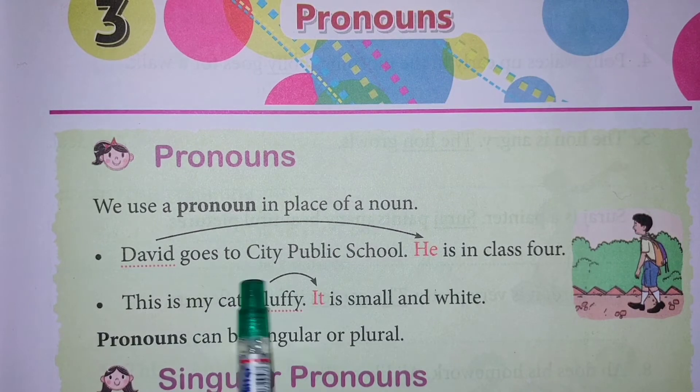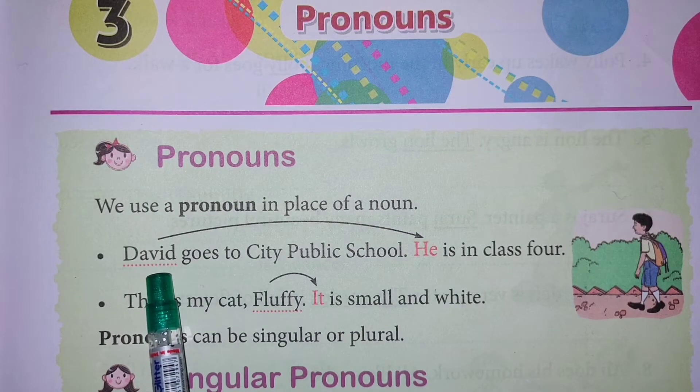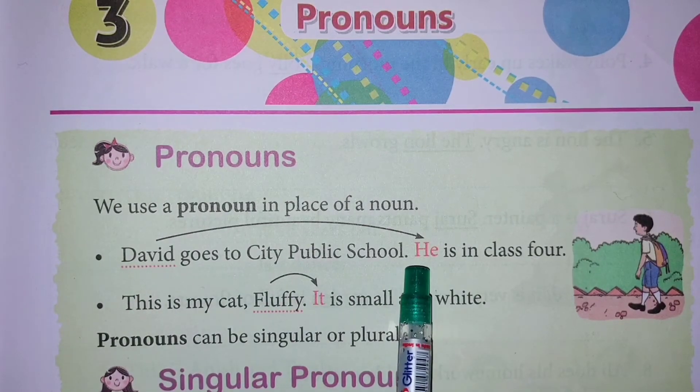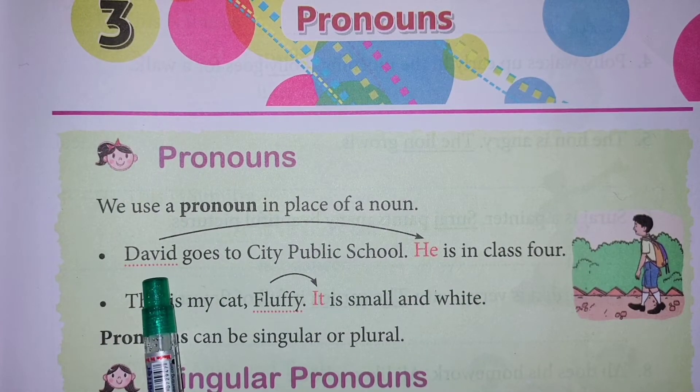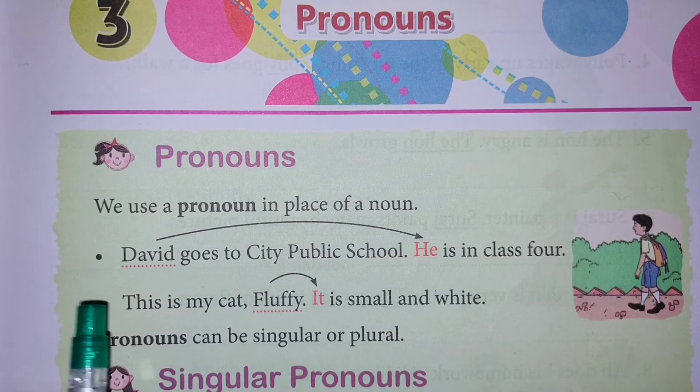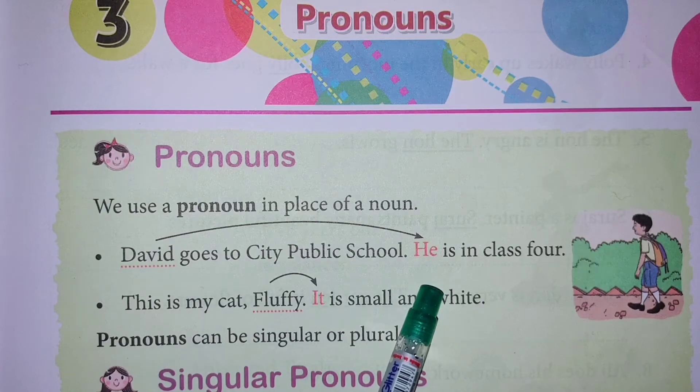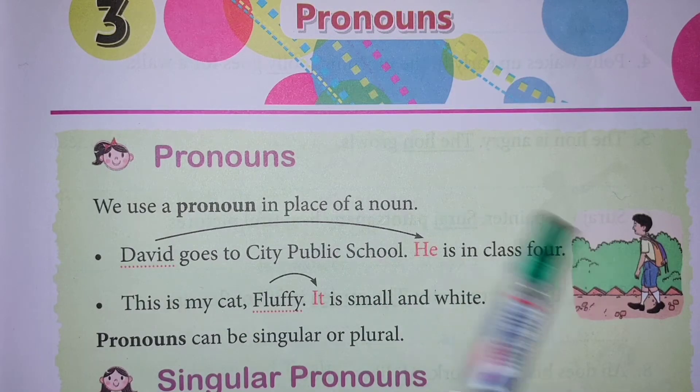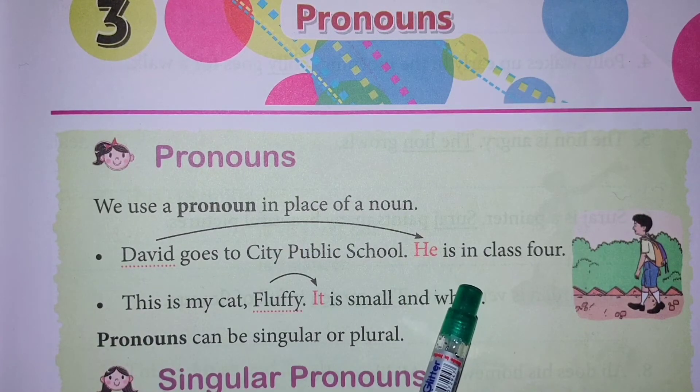David goes to city public school. He is in class 4. David is a male gender. If the name is female, suppose Anjali. Anjali goes to city public school. Anjali is a female gender, so we use she. She is in class 4. David is a male boy, so the pronoun is he.